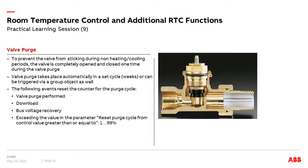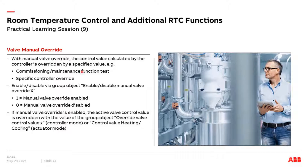Via KNX telegram we can override the calculated control value — for example for commissioning, maintenance, or tests. It is possible to override the calculated value using a one-bit information to activate it, and then via one byte send the manual override value. Then you will see the fan and also the valve follow exactly this manual value.